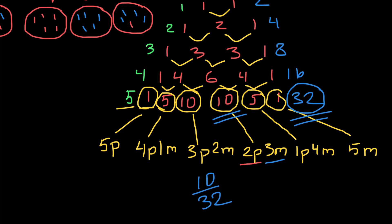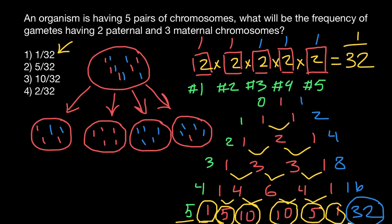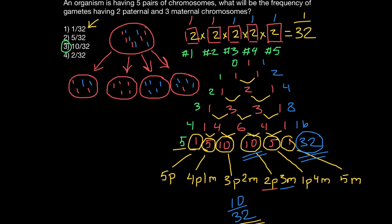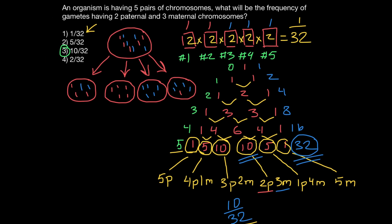According to our problem, we need to find the probability of having two paternal chromosomes and three maternally inherited chromosomes in the same gamete. The number of such combinations is 10. So the answer is 10 out of 32 — this is answer three. To summarize: when the order of events is given, multiply the individual probabilities of each event. If the order is not given, use Pascal's triangle to solve your problem.